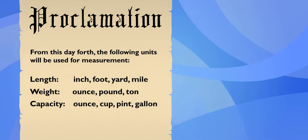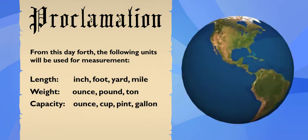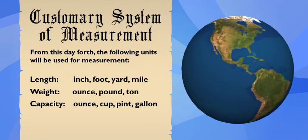And for liquid capacity, they used fluid ounces, cups, pints, quarts, and gallons. Now that was a good idea. We still use these standards in the U.S. It's called the customary system of measurement.